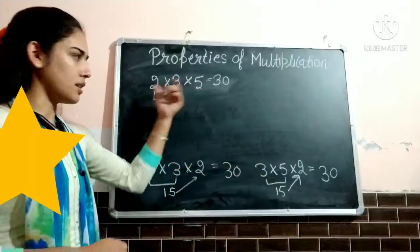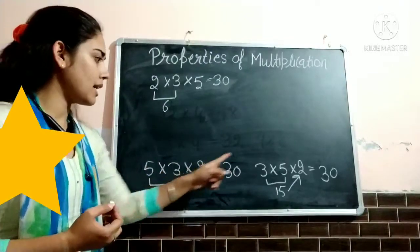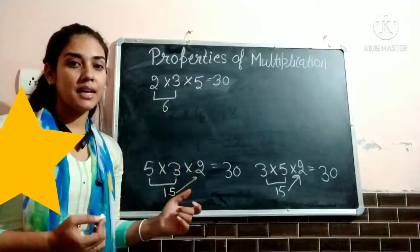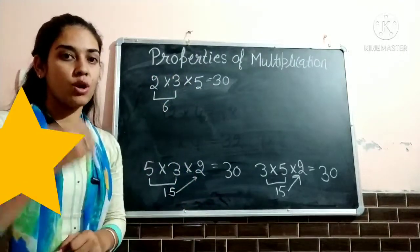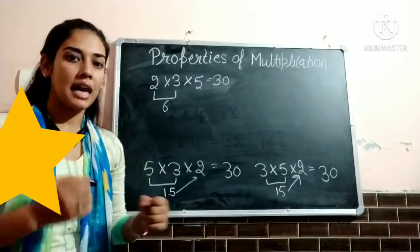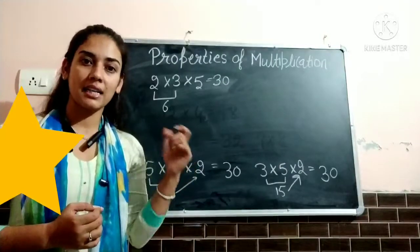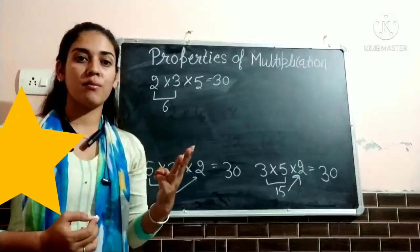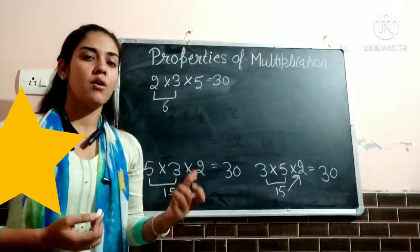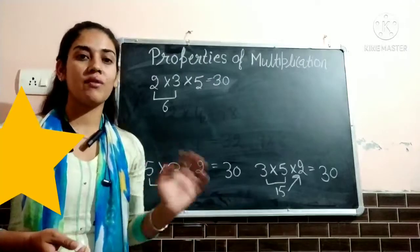So look here — there are three orders. I changed three numbers in different orders: 5 into 3 into 2, then 3 into 5 into 2, then 2 into 3 into 5. In every case the product is same. So the property here is: if three numbers are multiplied in different orders, then the product remains same.